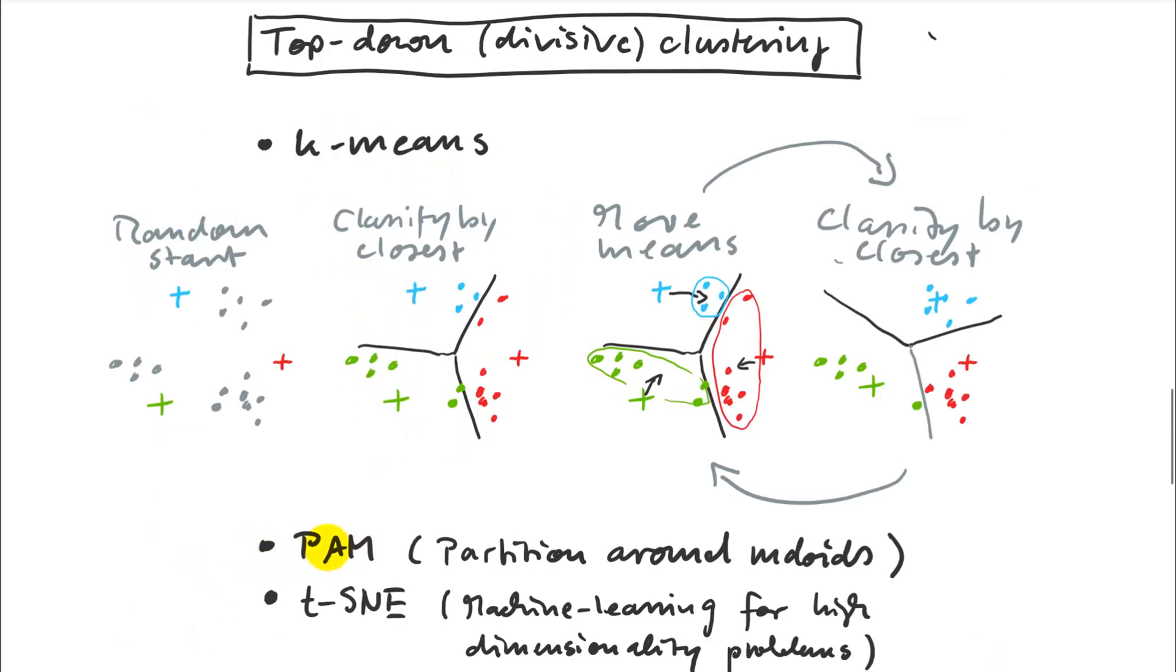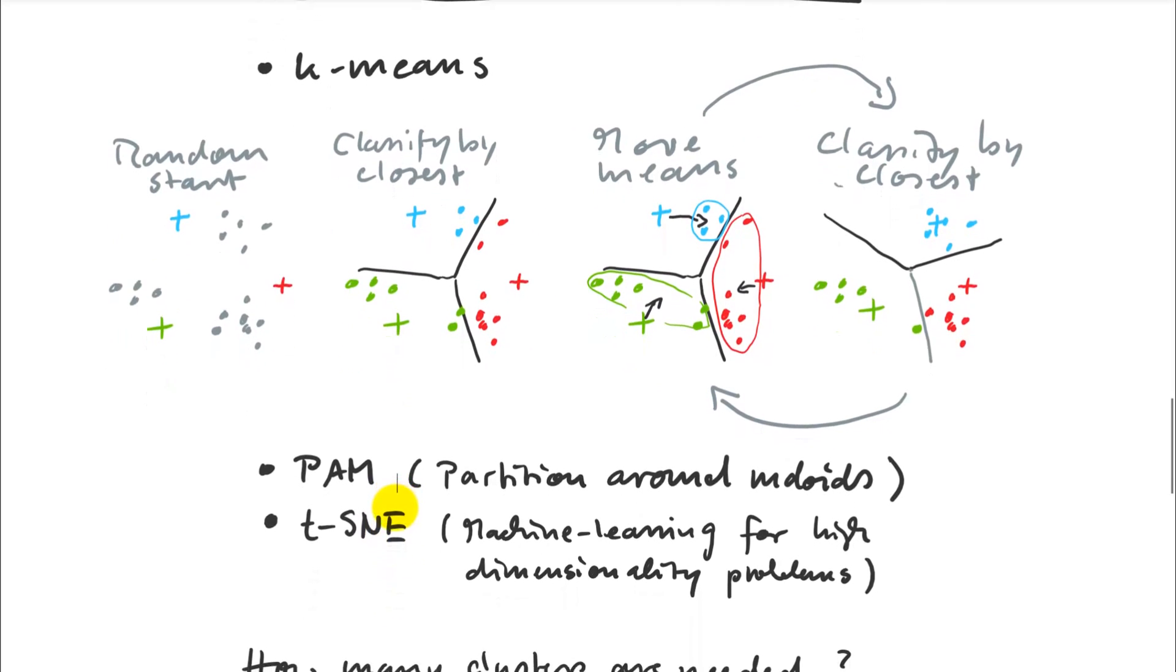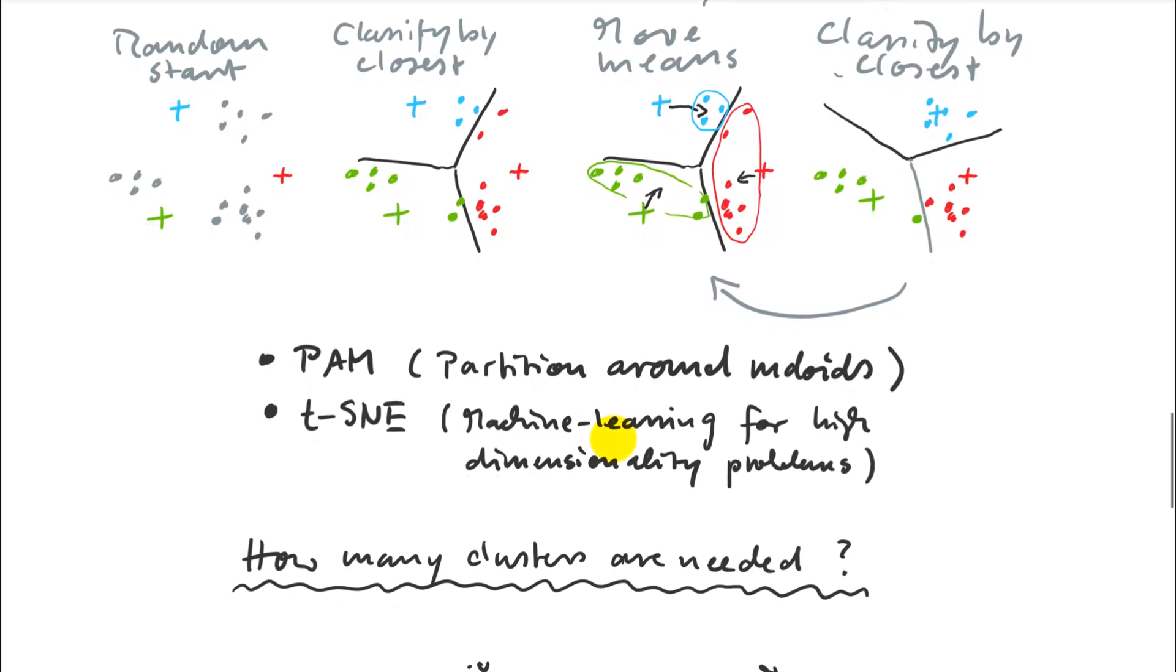There are other techniques like this. For example, PAM, partitioning around medoids. Medoids are like these means here, except that they have to be a point. It's like a mean, but this particular technique, instead of having a separate centroid, just jumps from point to point to find group means. And then t-SNE, that stands for t-distributed stochastic neighbor embedding. That's a complicated technique that I don't fully understand, but I do appreciate it. It's very effective for high dimensionality problems. If you have hundreds of thousands of variables, these techniques can struggle with this.